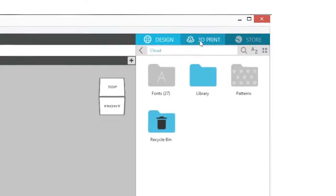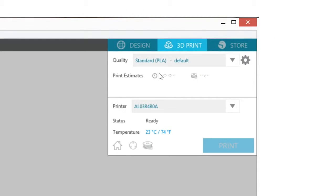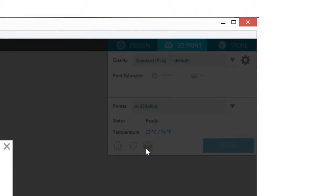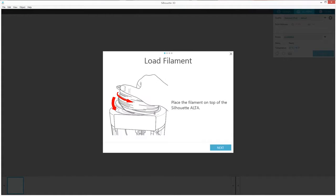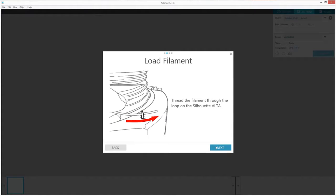In the software, click on the 3D print tab. In the upper right hand corner, ensure that your machine has been selected. With the Alta selected, click on the filament button. Next, click on Load Filament and go through the following steps to load your filament properly.